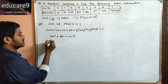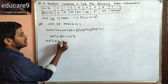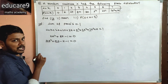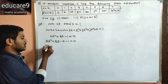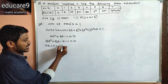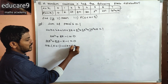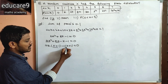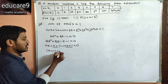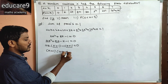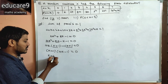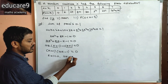Factoring 10K² + 9K − 1 = 0: rewrite as 10K² + 10K − K − 1 = 0. From the first two terms, 10K is common: 10K(K + 1). From the last two terms, −1 is common: −1(K + 1). So (K + 1)(10K − 1) = 0, giving K = −1 or K = 1/10.